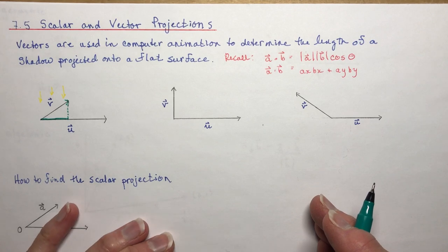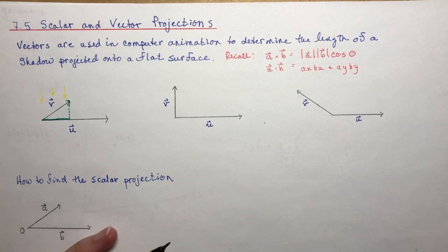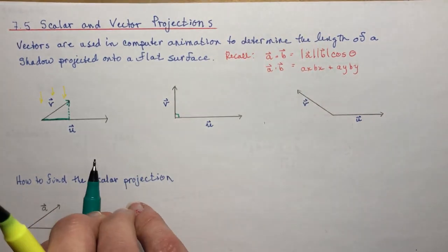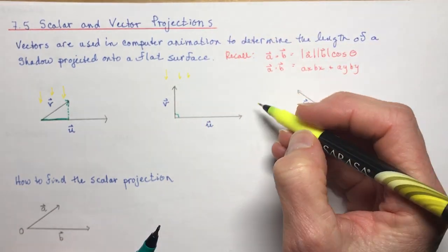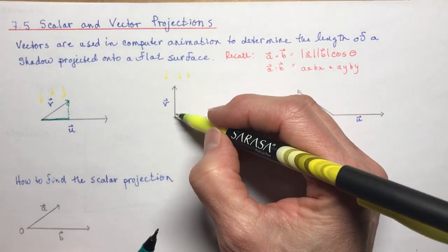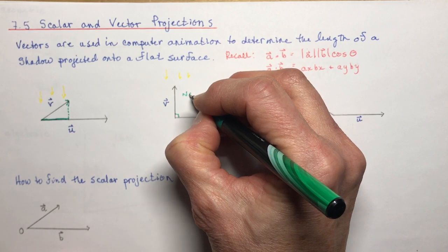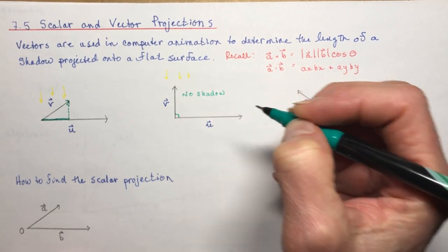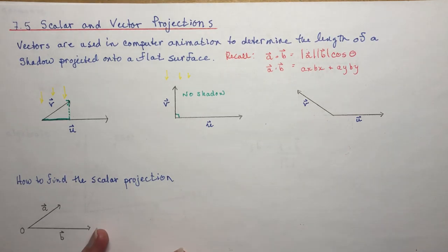When we do the vector projections, we're going to put little arrows on the bottom. You can also see that if a vector is perpendicular to another vector and you shine the sun from above, there's not going to be any shadow. This was one of the properties of the dot product: if the dot product is zero then the two vectors are perpendicular. So there's no vector projection when the sun is straight over our heads.